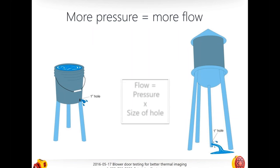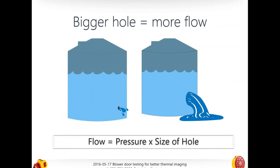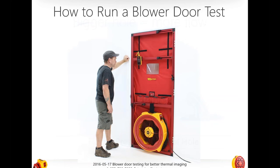Here's a good analogy. A five-gallon bucket with a one-inch hole — not much pressure, small hole, small flow. The same hole at the bottom of a large municipal water tank — much more pressure and a lot more flow. Same concept applies to heat. And comparing two large tanks with the same pressure: one with a smaller hole and one with a bigger hole — the bigger hole produces a lot more flow.